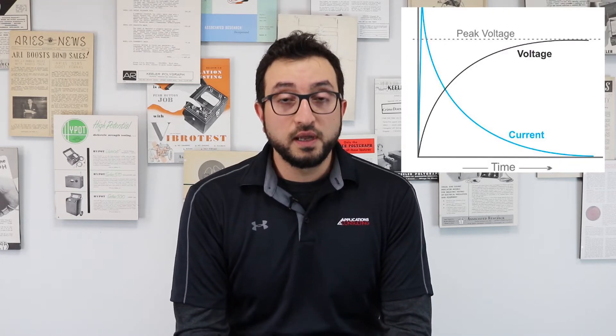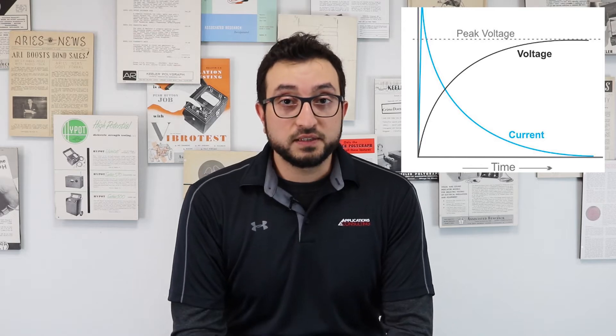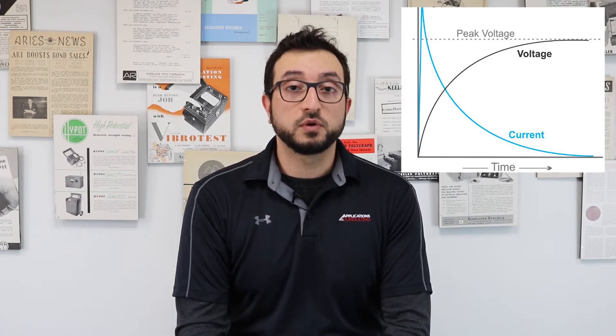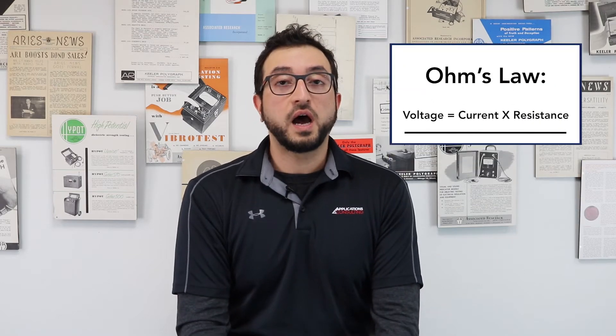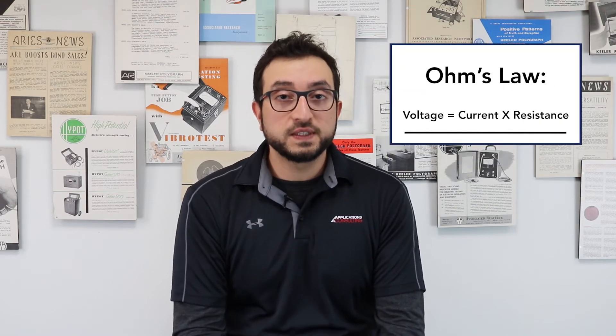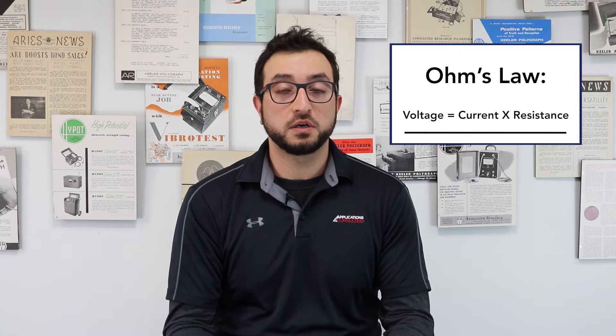That voltage results in a charging current that flows from the IR tester to charge the product's insulation. Once the capacitance of the product's insulation is fully charged, the only current that flows in the circuit is due to the resistance of the product's insulation. This is called the real current, and it is very small in value. The IR tester then uses this small real current value to calculate back the resistance of the product's insulation.